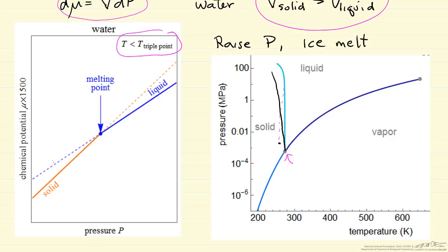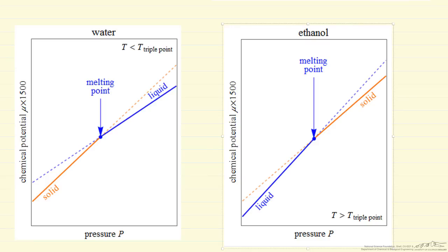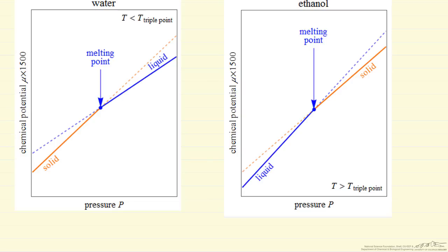If we look at most other species — for example, ethanol — the reverse is true. On the left is the chemical potential versus pressure plot for water; on the right is the equivalent plot for ethanol. Notice that the slope for the liquid line is now greater than the slope for the solid line. This means the molar volume of the liquid is greater than the volume of the solid for ethanol. Therefore, at low pressures we have liquid, and as we raise the pressure for ethanol, we convert the liquid to the solid — completely opposite behavior from water.